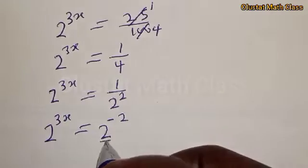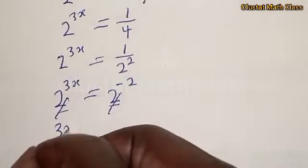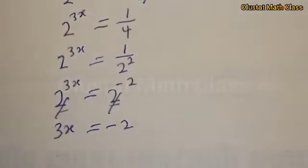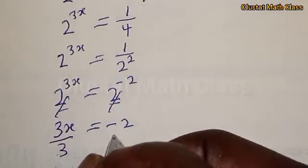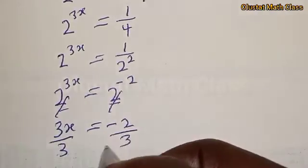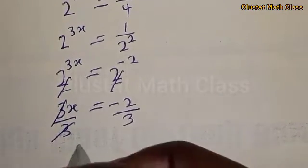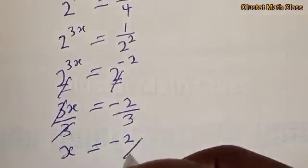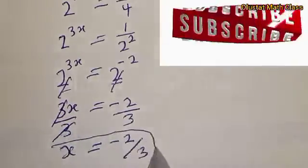We have the same base, so this cancels. We have 3x equal to negative 2. Therefore, we divide both sides by 3, and x is equal to negative 2 over 3. That is the value of x. I hope you are enjoying it — it is very simple and can be solved in less than 1 minute.